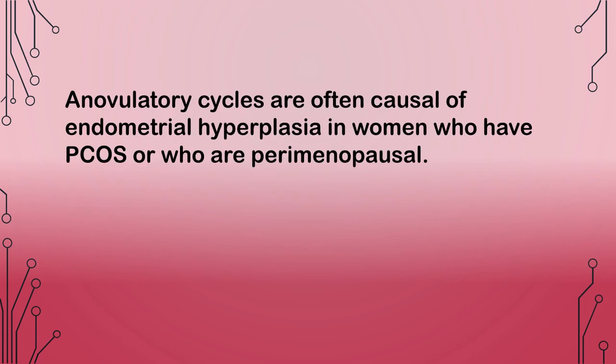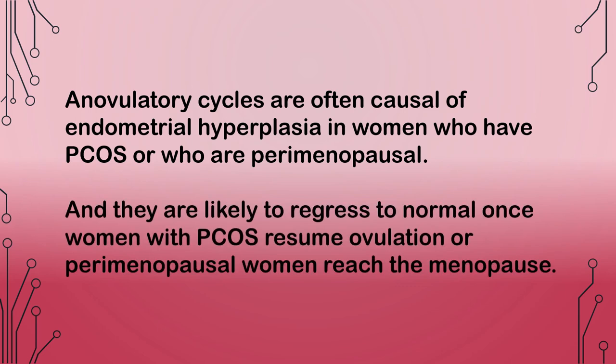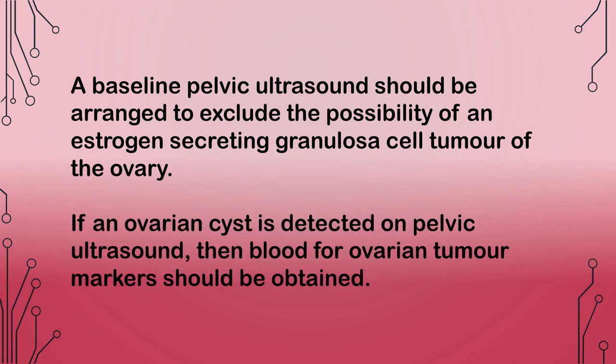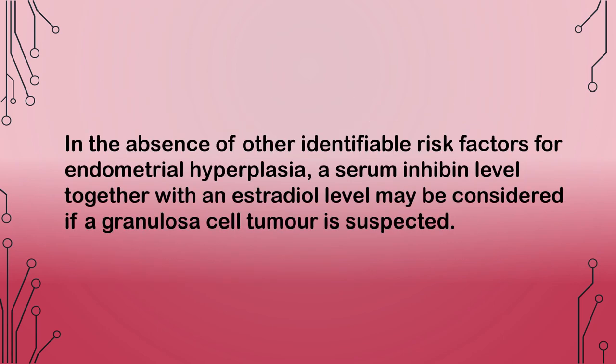Anovulatory cycles are often causal of endometrial hyperplasia in women with PCOS or who are perimenopausal, and they are likely to regress once women with PCOS resume ovulation or perimenopausal women reach the menopause. A baseline pelvic ultrasound should be arranged to exclude an estrogen-secreting granulosa cell tumor of the ovary. If an ovarian cyst is detected, blood for ovarian tumor markers should be obtained. A serum inhibin level together with an estradiol level may be considered if a granulosa cell tumor is suspected.